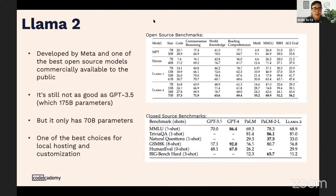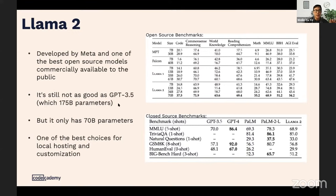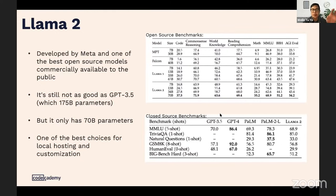LLaMA 2 is one of the best open-source models commercially available to the public. It comes in sizes ranging from 7 billion to 70 billion parameters, though it's still not as large as GPT-3.5 at 175 billion parameters. Looking at the benchmarks, LLaMA 2 performs at the top of open-source models but still has some ways to go compared to GPT-3.5 and GPT-4.